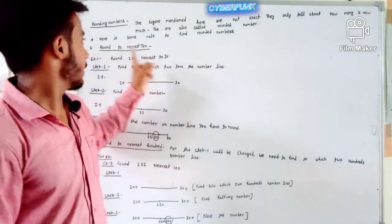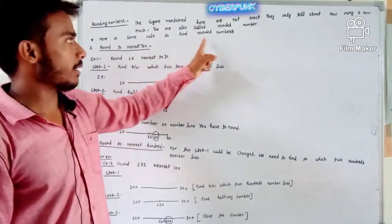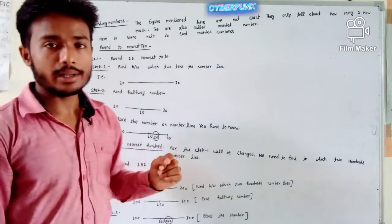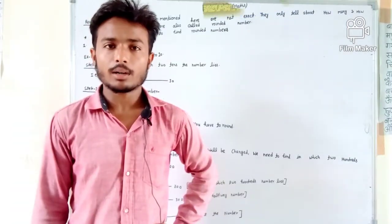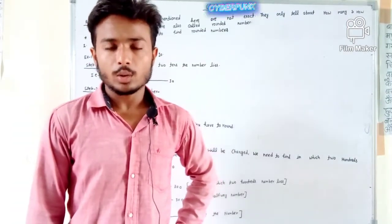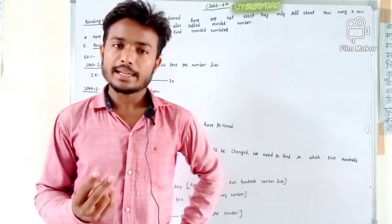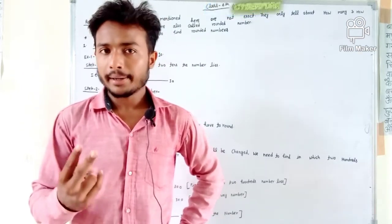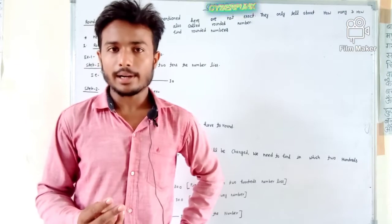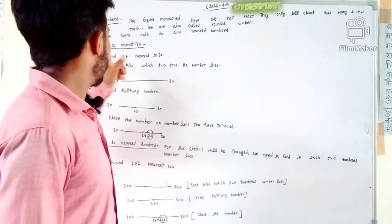There are some rules to find Rounding Numbers. There are some rules by which we can find Rounding Numbers. There are two types: first is nearest to 10, and the other is nearest to 100.